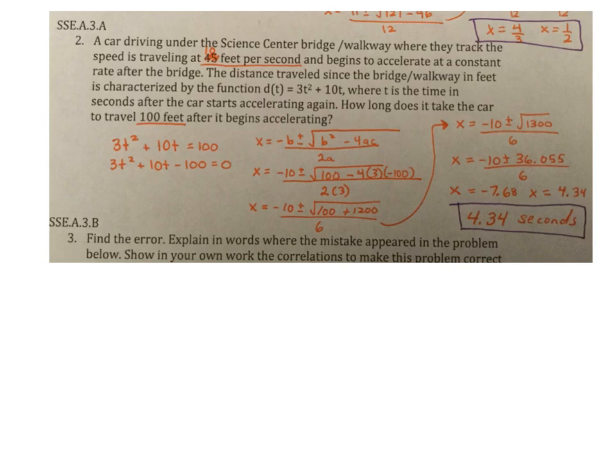Again, I went ahead and ran it through quadratic formula and plugging everything in the correct places. And as you can see, all my math work. And yes, square root of 1300 is a decimal. I got two decimal answers, but here's the deal. When we're talking about how long does it take the car to travel, I cannot have a negative answer for my time. So that's why my answer is 4.34 seconds.